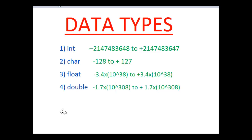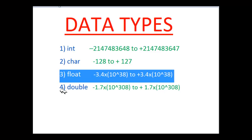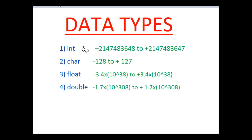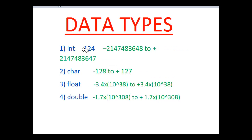In C programming there are four primary data types: int, char, float, and double. The first one, int, is short for integer. You can see from the green color numbers the range of values it can accommodate — roughly minus 2 billion to plus 2 billion. For our programming purposes we can treat that limit as essentially infinite. Integers are numbers which don't have a decimal point, like 1, 2, minus 24, minus 124.